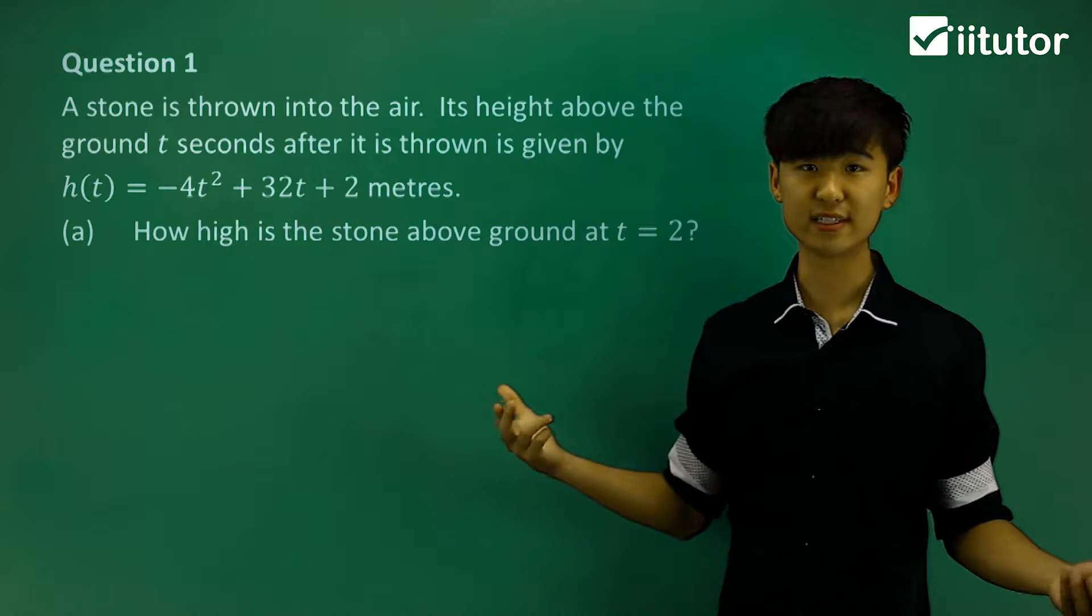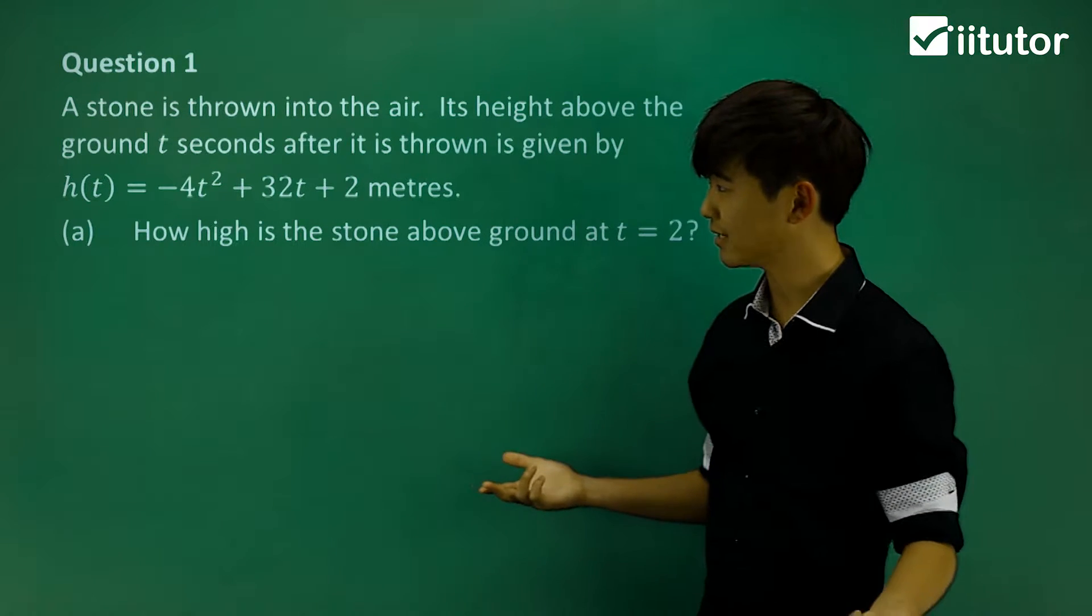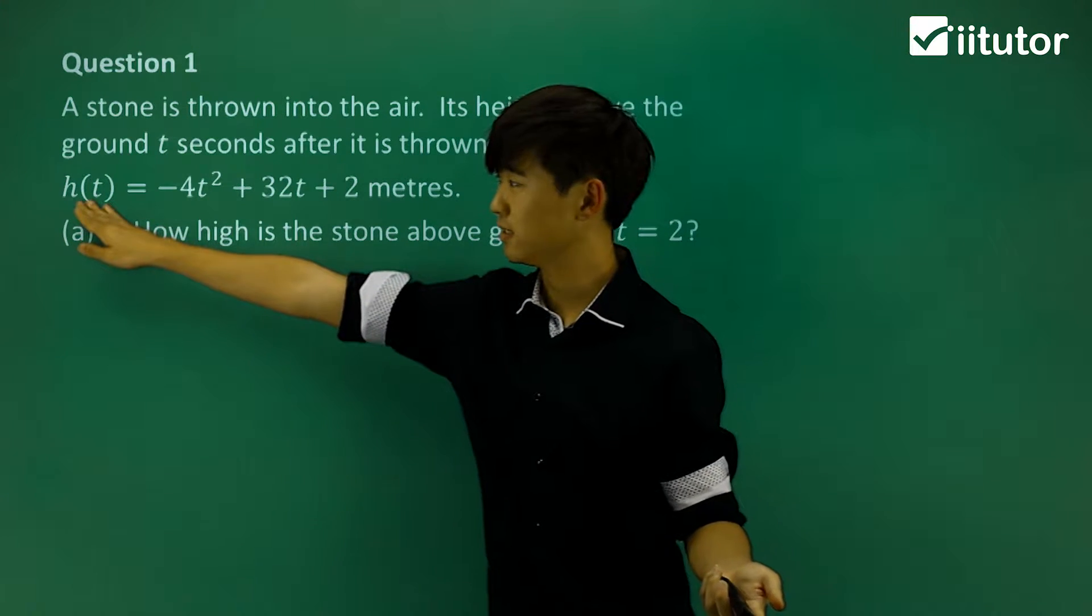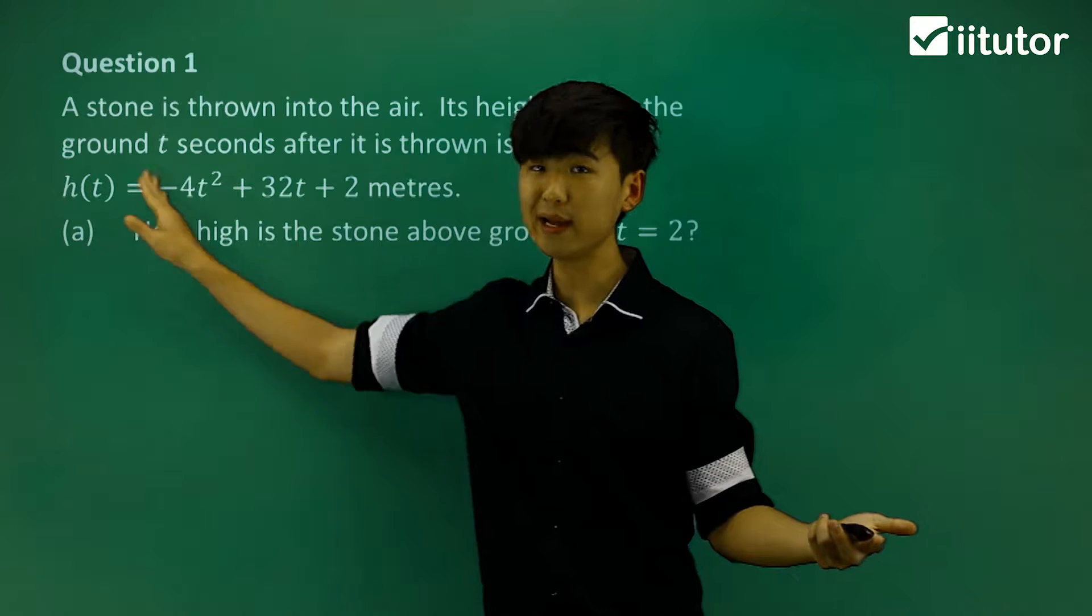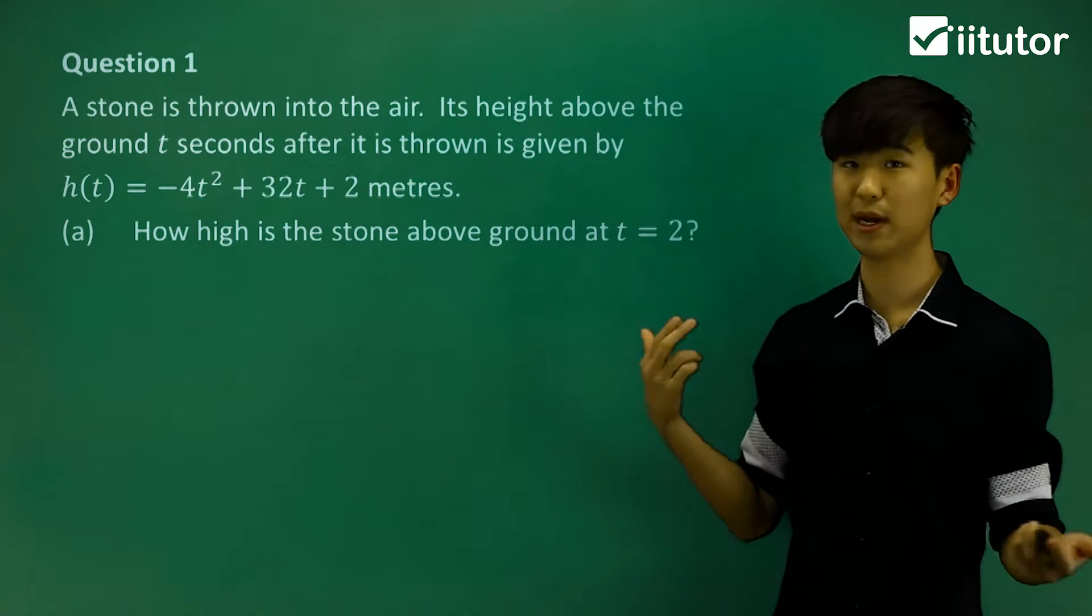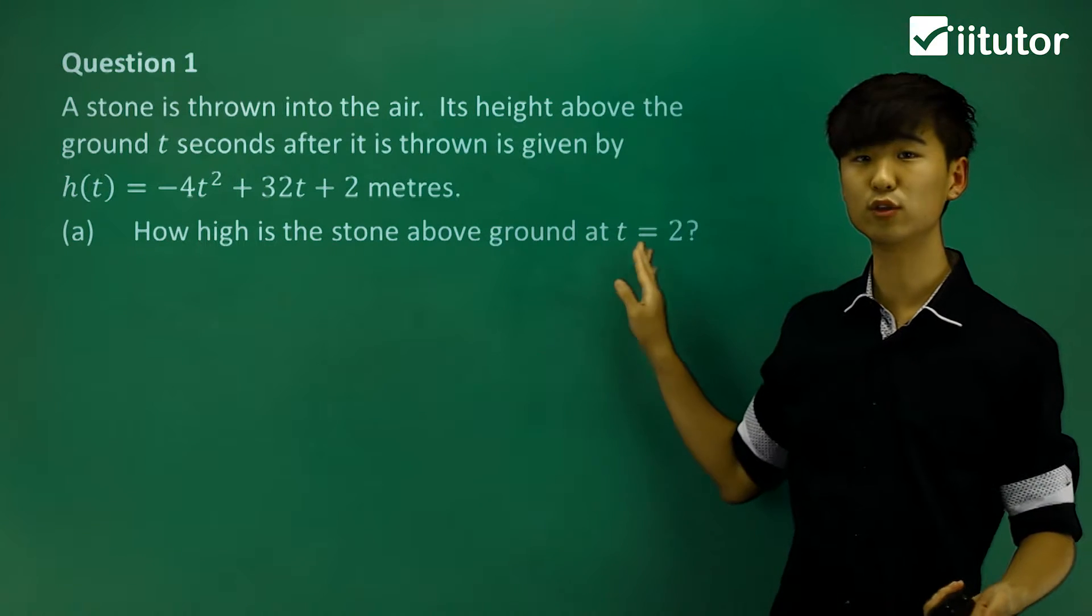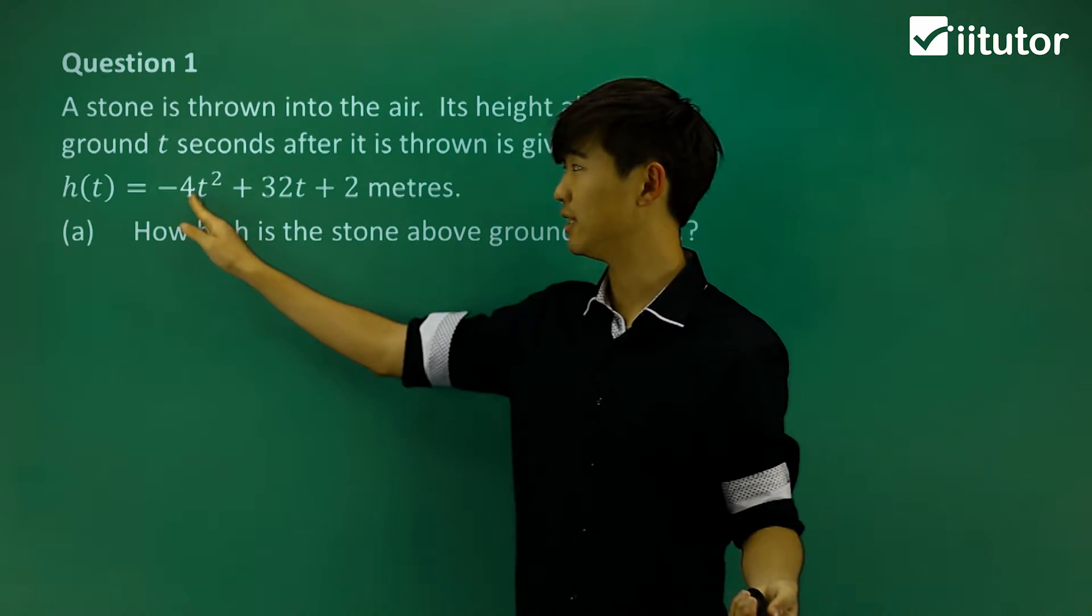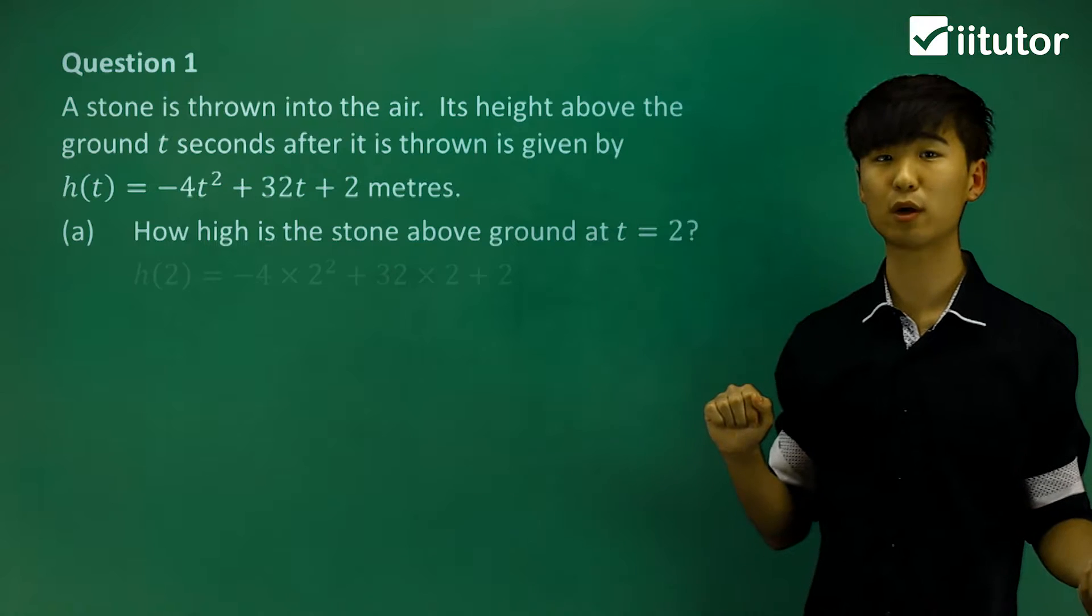How high is the stone above ground at t = 2? The height is represented by h and t is the time in seconds. What's the height when t = 2? We're going to substitute t = 2 into the quadratic.